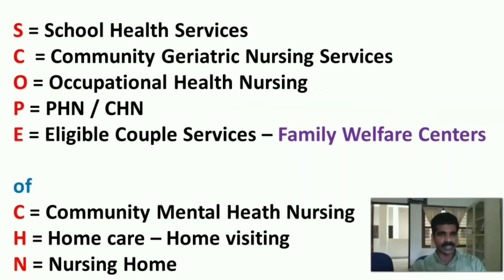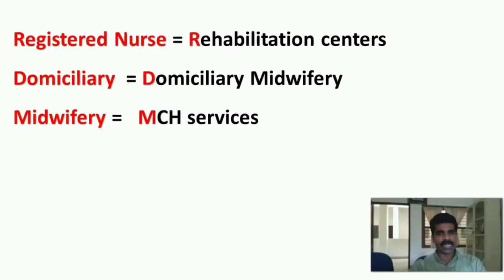S stands for school health services. C stands for community geriatric nursing services. O stands for occupational health nursing. P stands for public health nursing or community health nursing. E stands for eligible couple services through family welfare centers. C stands for community mental health nursing. H stands for home care or home visiting. N stands for nursing homes. Registered nurse stands for registered nurse and rehabilitation centers. Domiciliary stands for domiciliary midwifery. Midwifery stands for MCH — maternal and child health services.